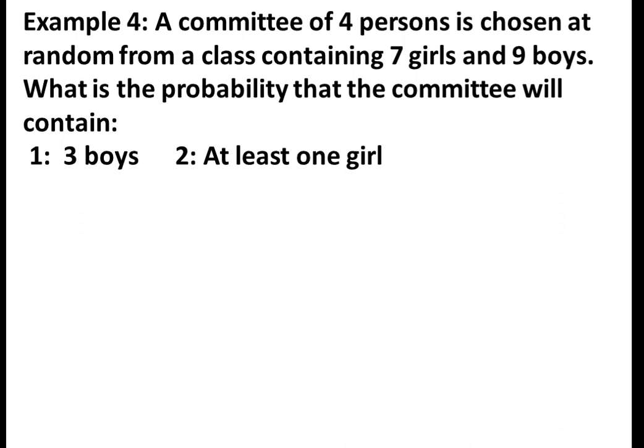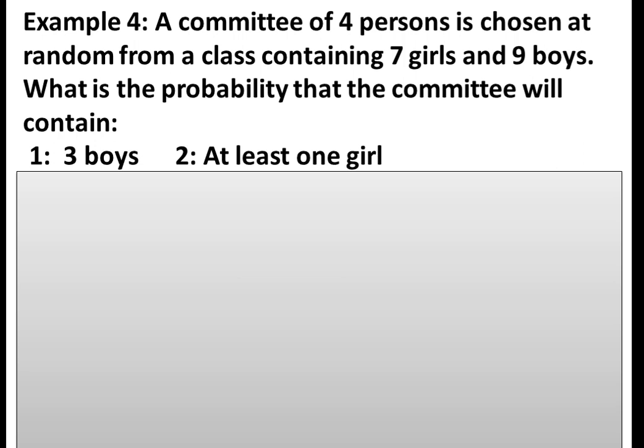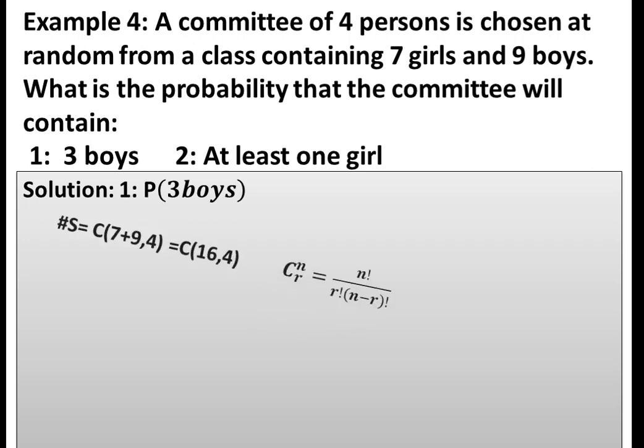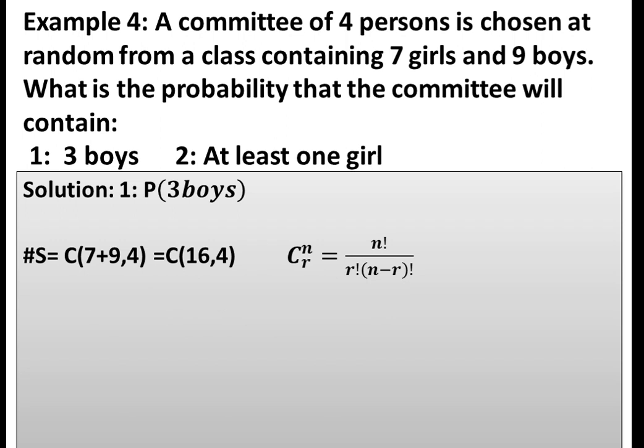The probability requires calculating the sample space. The sample space is the combination of choosing 4 from 16 total students. This uses the combination formula C_r^n which equals n factorial divided by r factorial times n minus r factorial.